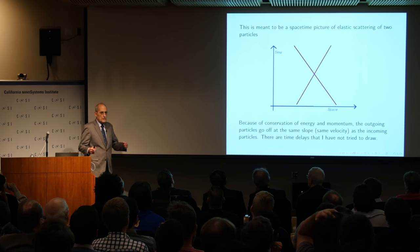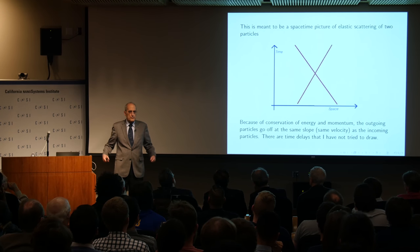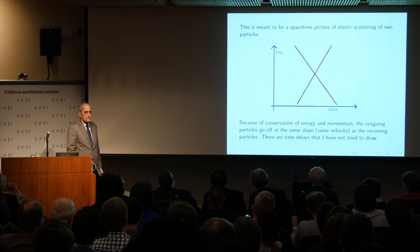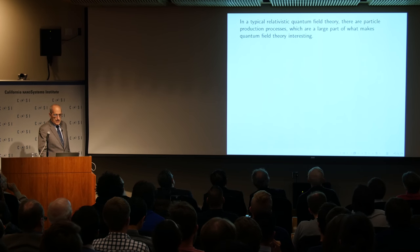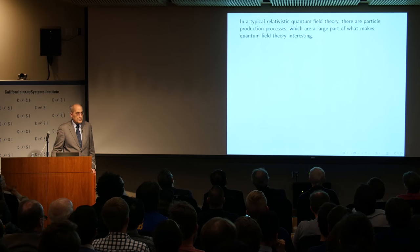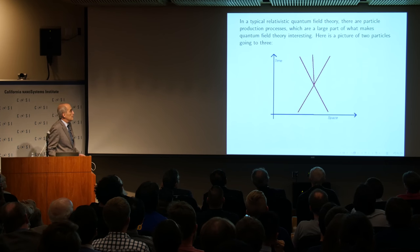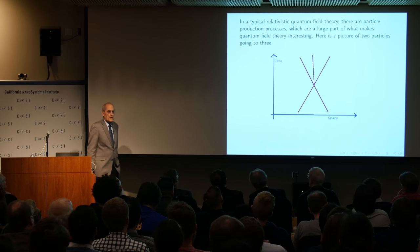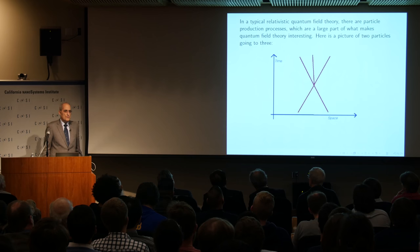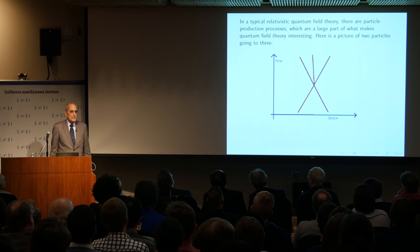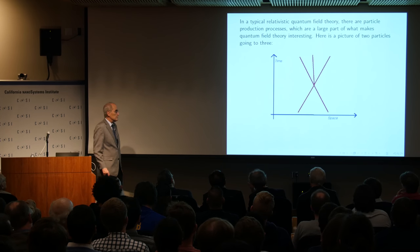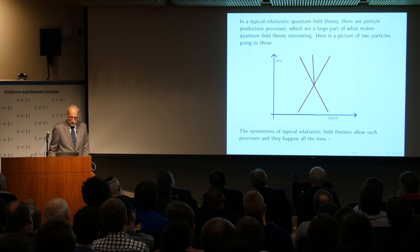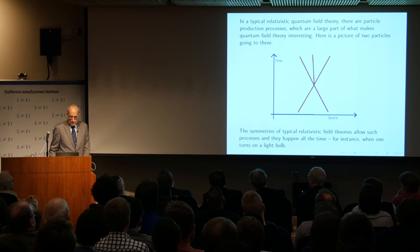The reason delays won't be important is that we'll consider phenomena happening very far apart in spacetime, while the delays are microscopic — of order 1 over m, or h-bar over mc, where m is the smallest mass in the theory. In a typical relativistic field theory, there are particle production processes — a large part of what makes quantum field theory interesting. Here's a picture of two particles going to three, emanating from a common point where the two met.